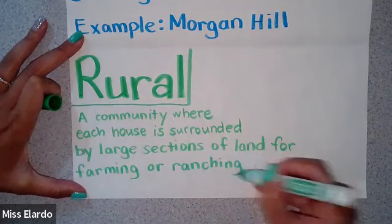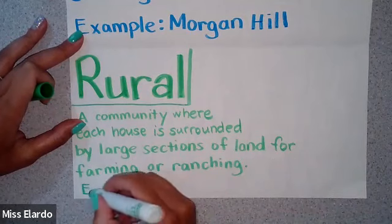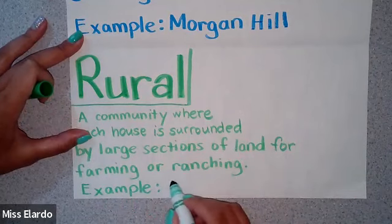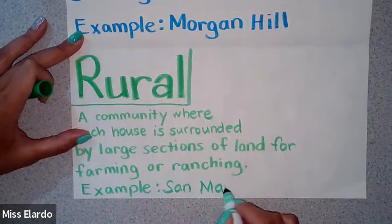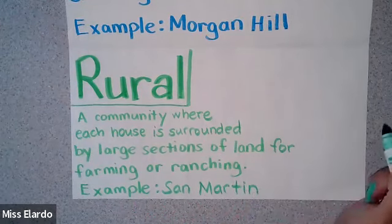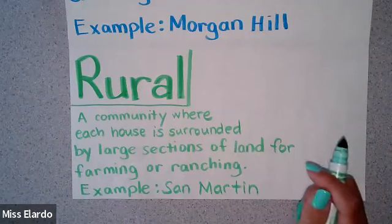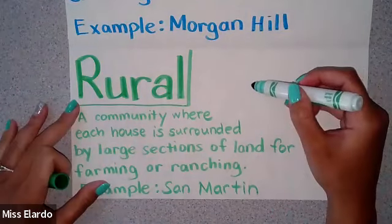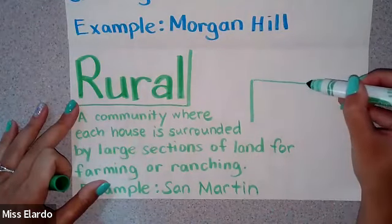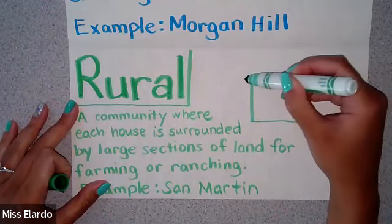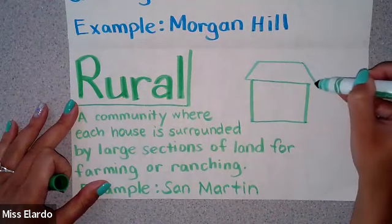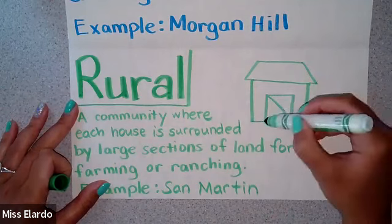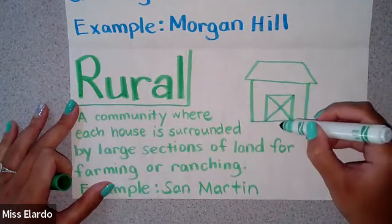An example of this that's close to us is the city of San Martin. You've probably heard of San Martin — it's very close to us. San Martin is a rural community. For this picture, I'm going to draw a little barn. This is my barn, and then here's like a little pathway.